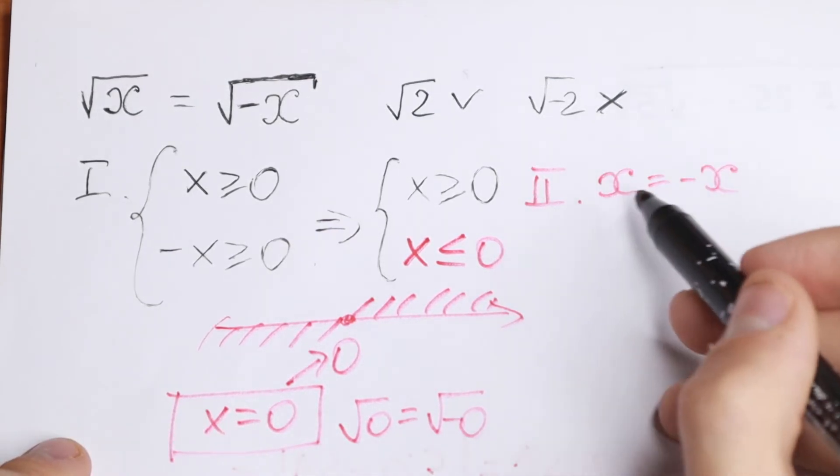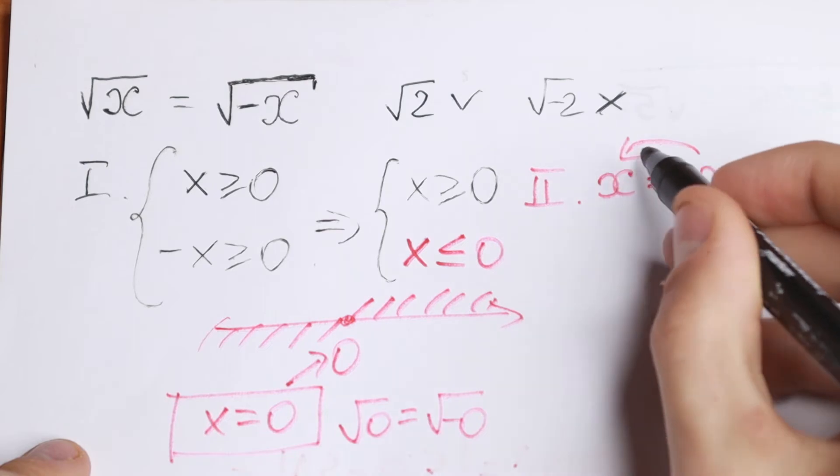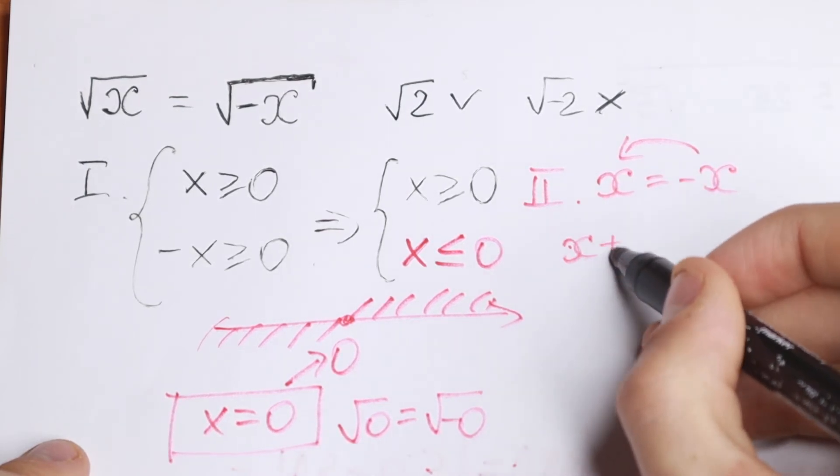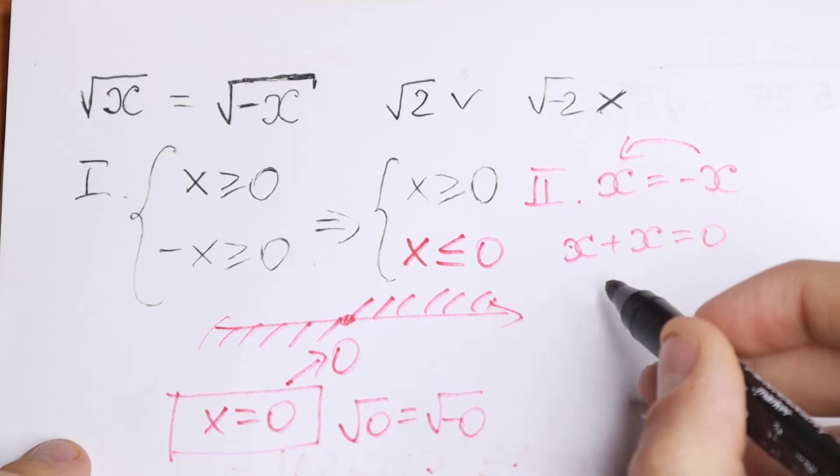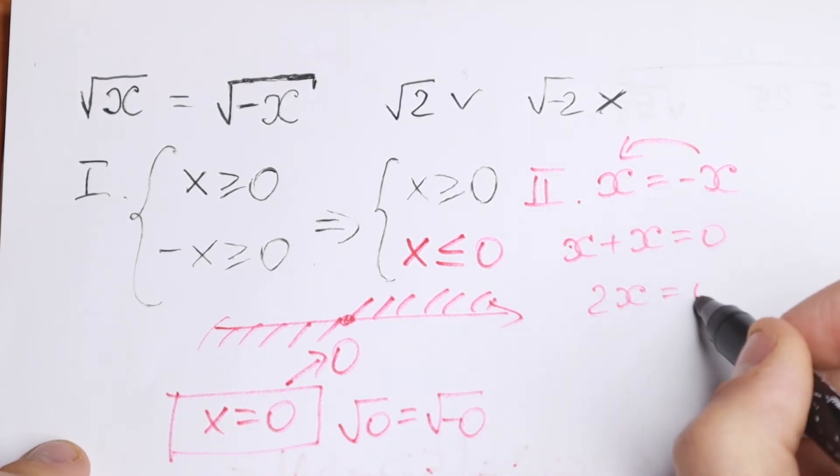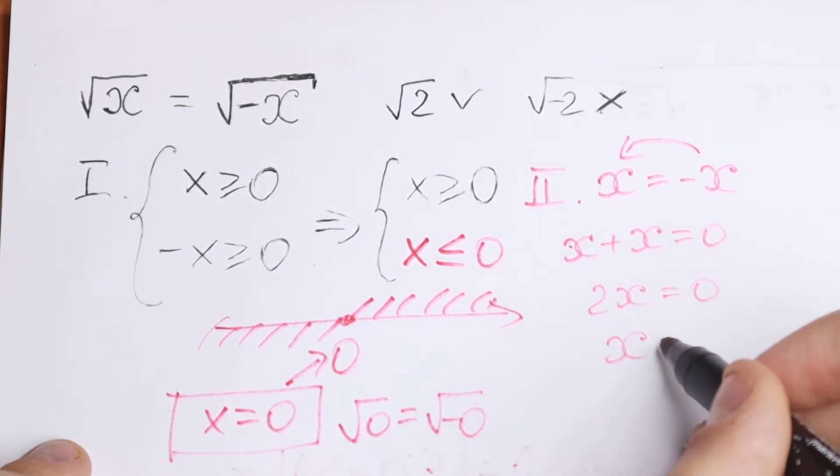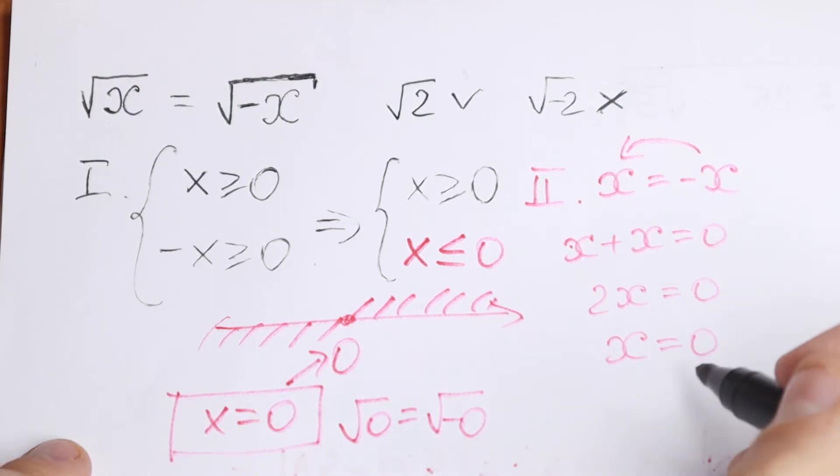If we bring minus x to the left, we have x plus x equals zero, so 2x equals zero, and x equals zero when we divide both sides by two.